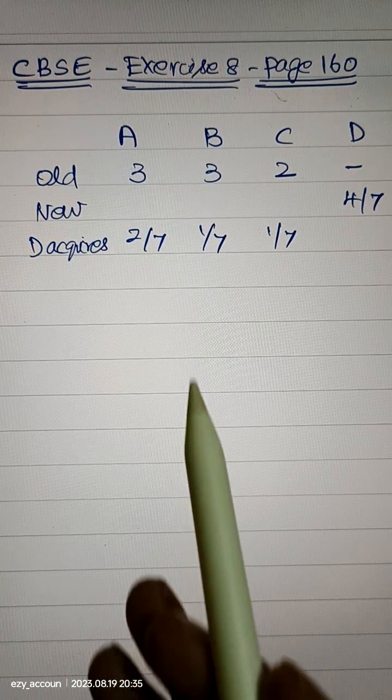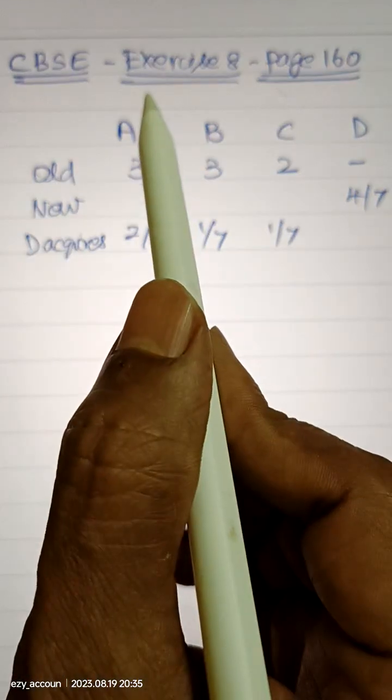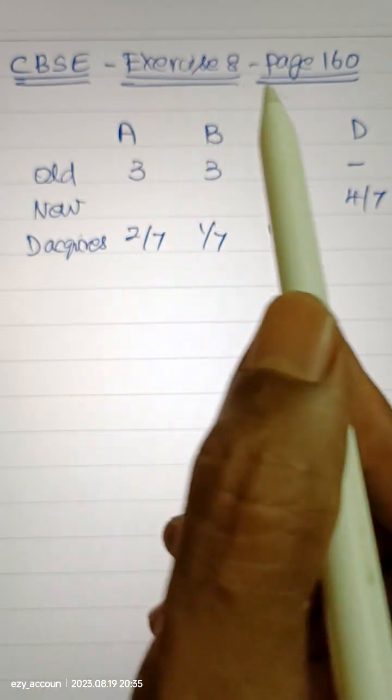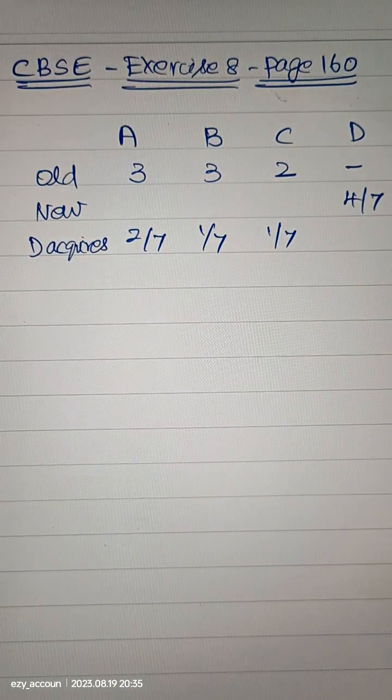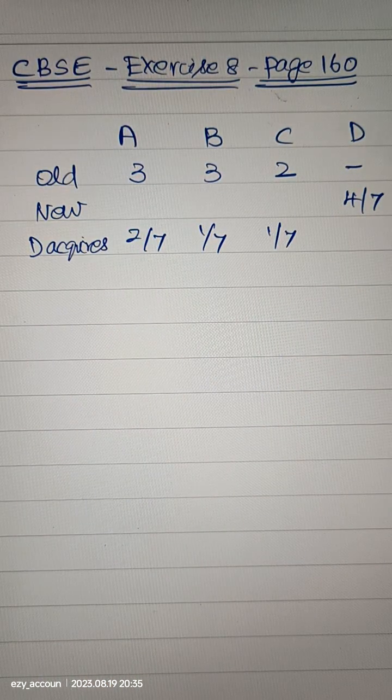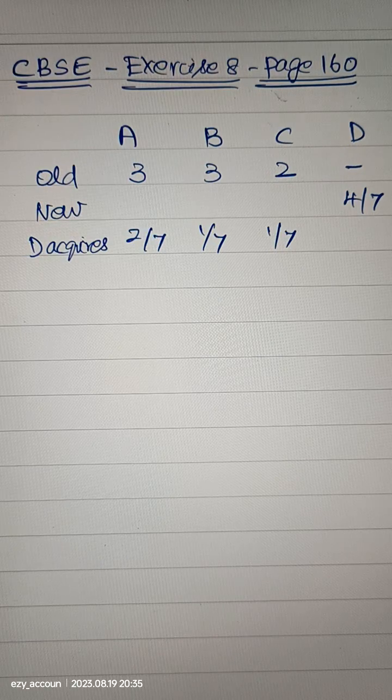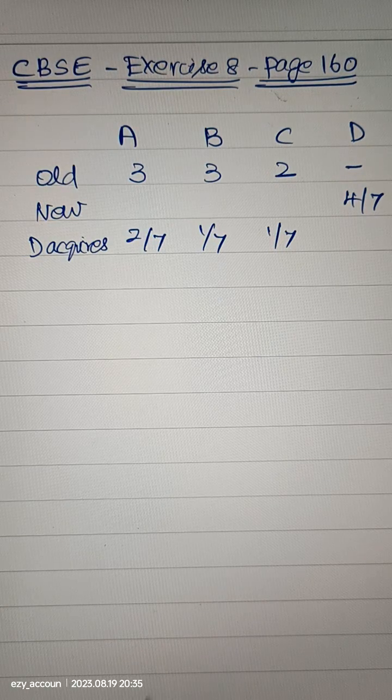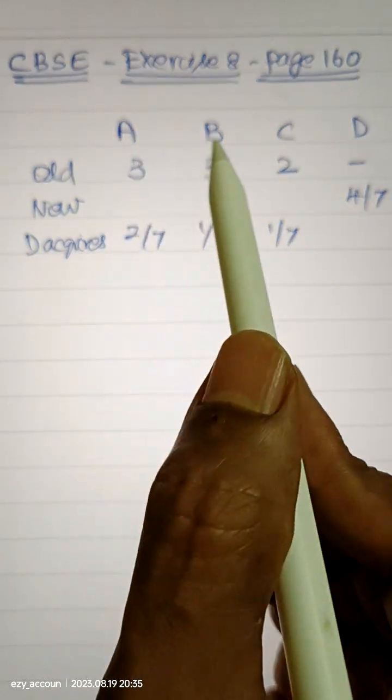Hello students, let us see a sum from partnership ratio, Exercise 8, Page 160. It will be mix of Tamil and English in my audio, but I will keep it in very simple English. There are three partners A, B, C.